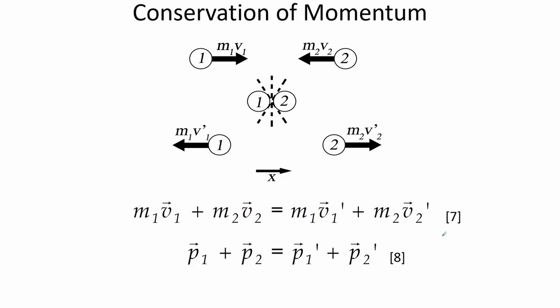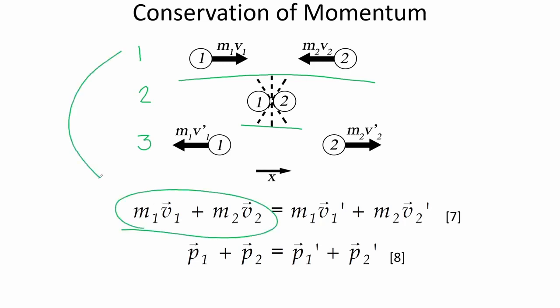In this figure we see three scenarios. In the first, two objects — mass 1 and mass 2 — move toward one another with different masses and velocities. In the second, they collide; in the third, they separate in opposite directions. The expression shown describes conservation of momentum: the initial momenta of the objects equal the momenta after collision. We assume no other forces are involved except those between the two masses.